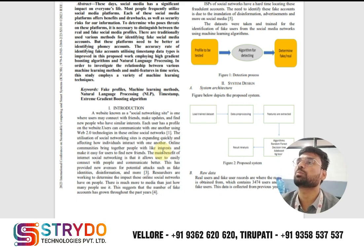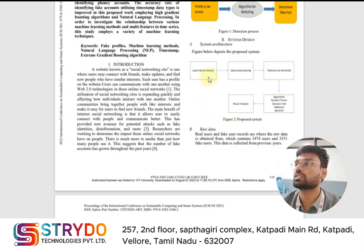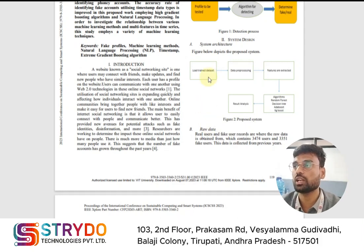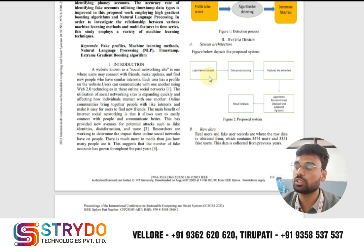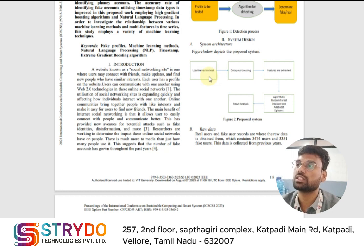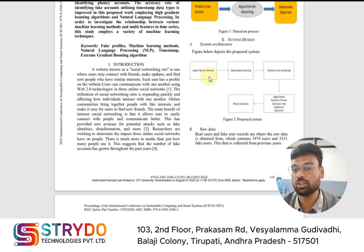Here we are taking the social media platform as Twitter. We gather the dataset regarding Twitter data. In machine learning, we have to train the machine with some previous data — by training on past data we predict the future. So here we are going to train the machine with some fake profiles and some real profiles, and after training, we give input so it can detect whether a profile is fake or real.